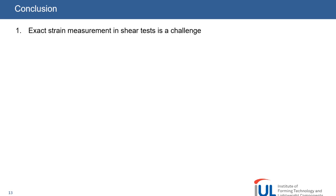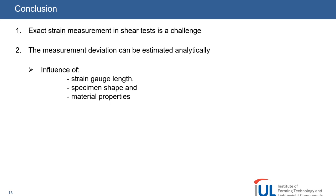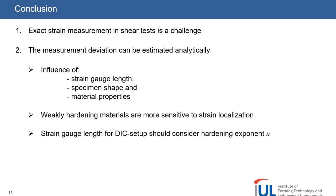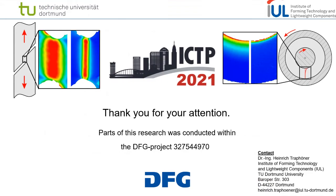Let me finally summarize the basic take-home messages. First of all, the exact strain measurement in shear tests is a challenge, since strain localization occurs which leads to measurement deviations. The measurement deviations can be estimated analytically with our new analytical model, considering influences of the strain gauge length, the specimen shape, and the material properties. Weakly hardening materials are more sensitive to strain localization, and to reduce the deviation, the strain gauge length in DIC setup should consider the hardening exponent N. Last of all, we presented an in-plane torsion specimen design which is capable to significantly reduce the strain localization. Thank you for your attention.